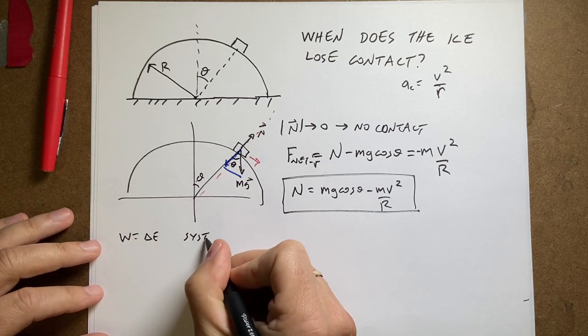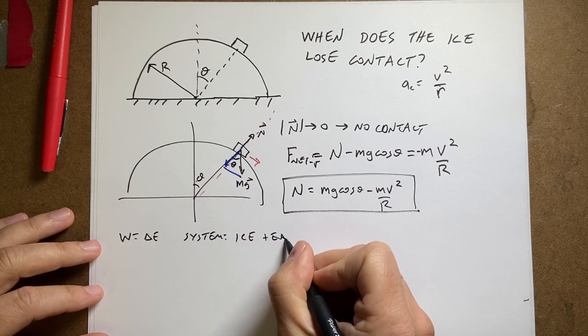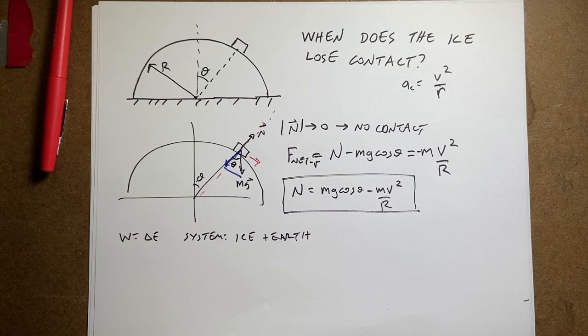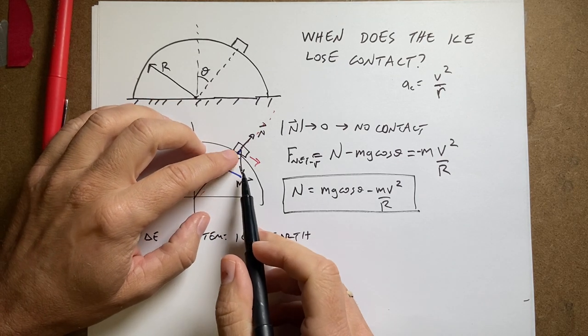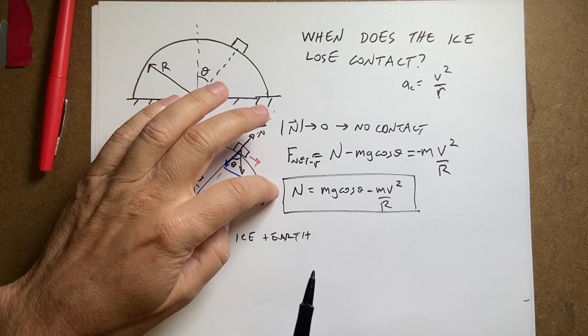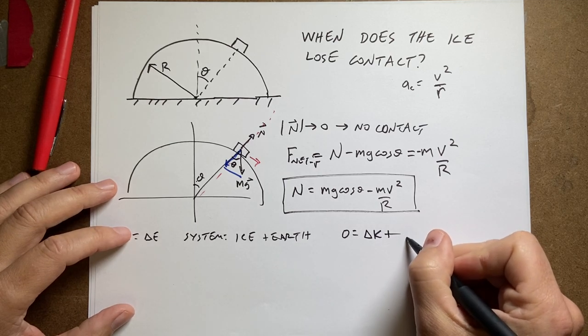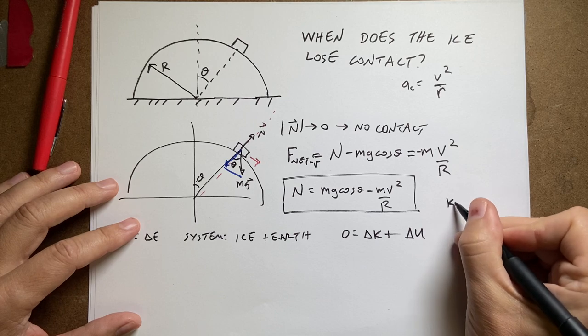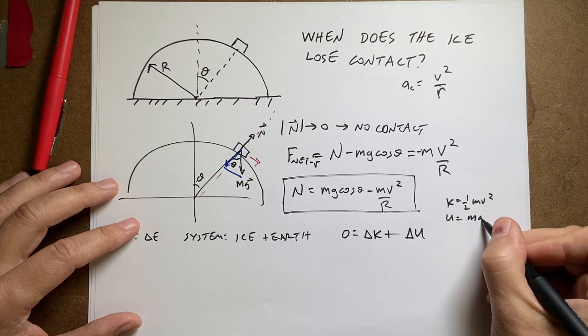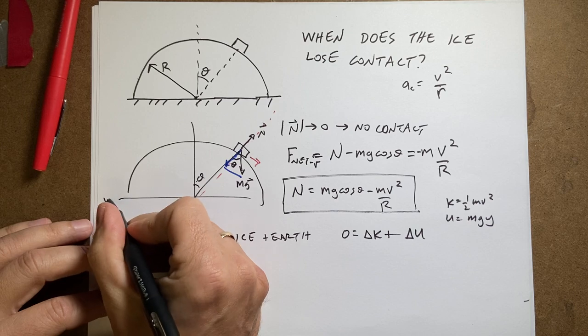And then I'll say the system of the ice plus the earth. And if I have the ice plus the earth of the system, I can have gravitational potential energy. And so I don't have work done by gravity. The normal force does zero work on the system because it's perpendicular to the motion. So I have zero equals delta k plus delta u. Where k is one half m v squared. U is mg y. So now the next thing I need to do is pick where is y equal to zero. And I'll pick down here y equals zero.